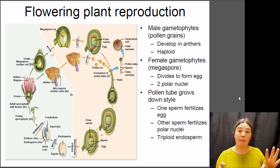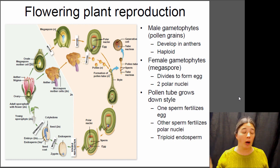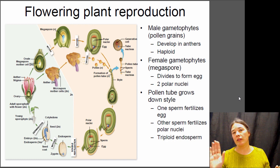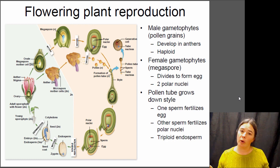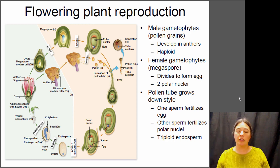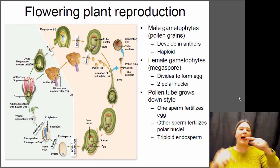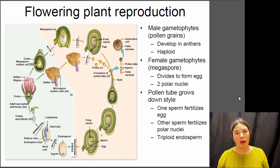The take-home message is that we always have two generations: a gametophyte and a sporophyte. The sporophyte is always diploid; the gametophyte is always haploid. The sporophyte makes spores; the gametophyte makes gametes. Across different types of plants the relative sizes of the sporophyte and gametophyte differ, but the pattern is always the same. That's it for alternation of generations.